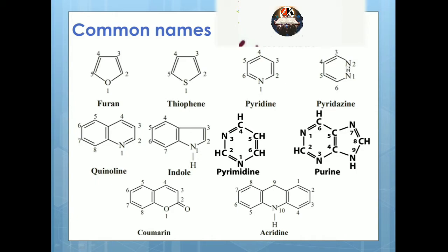Pyrimidine is the second situation, with numbering: one nitrogen is position 1, then 2, 3, 4, 5, 6. In purine the numbering goes 1, 2, 3, 4, 5, 6, 7, 8, 9. Remember, purine and pyrimidine are very important nitrogenous bases in biochemistry — in DNA and RNA. Adenine and guanine are purine bases; cytosine, thymine, and uracil are pyrimidine bases. Thymine belongs to DNA and uracil belongs to RNA.